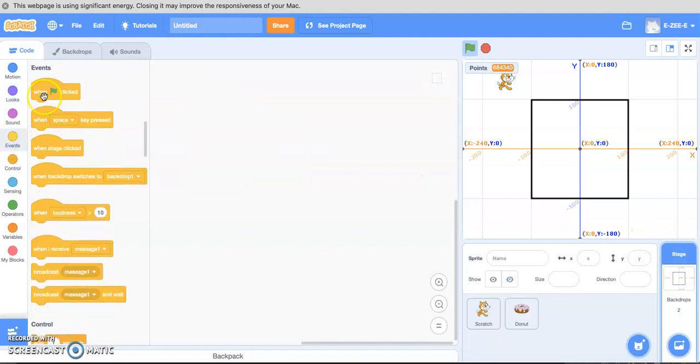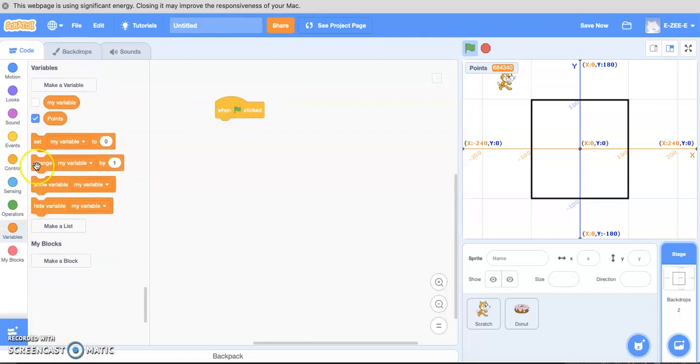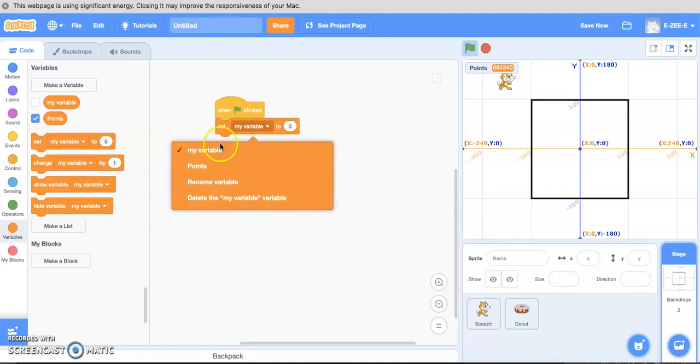Go to events. When game starts, we're just going to set some variables. So we're going to set my variable. Not change. Set. Set points to zero. Simple enough. Game starts. Points are now zero. We don't have a donut.